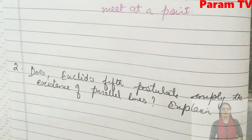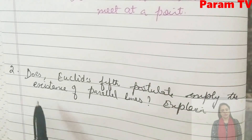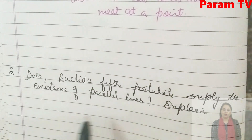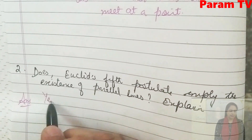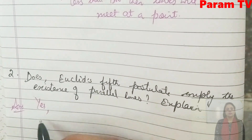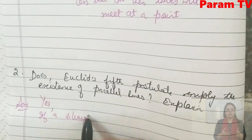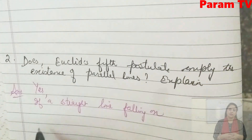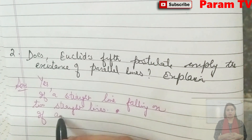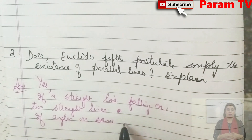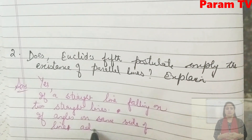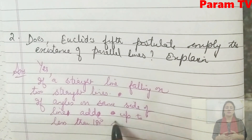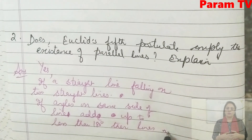The next question is: does Euclid's 5th postulate imply the existence of parallel lines? Yes. The reason is: if a straight line falls on two straight lines and the angles on the same side of the line add up to less than 180, then the lines will meet.